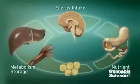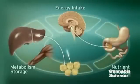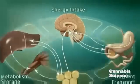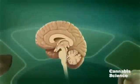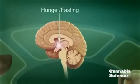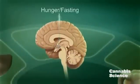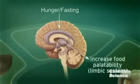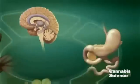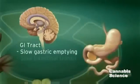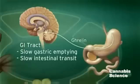Endocannabinoid system activity in the central nervous system regulates food intake. For example, ECS stimulation by hunger and fasting signals stimulates appetite and increases the palatability of food. Endocannabinoids slow gastric emptying and GI transit and appear to stimulate secretion of ghrelin, a neuropeptide that increases appetite and food intake.